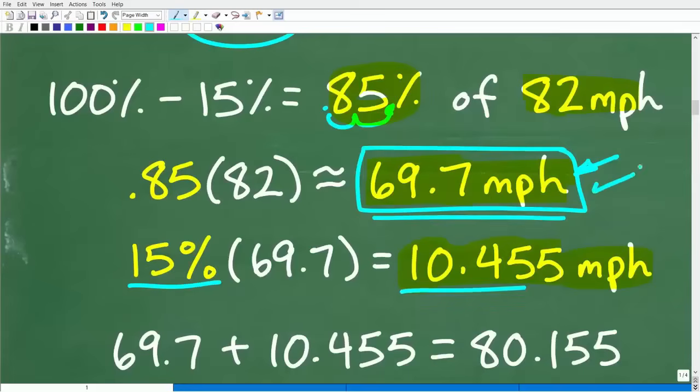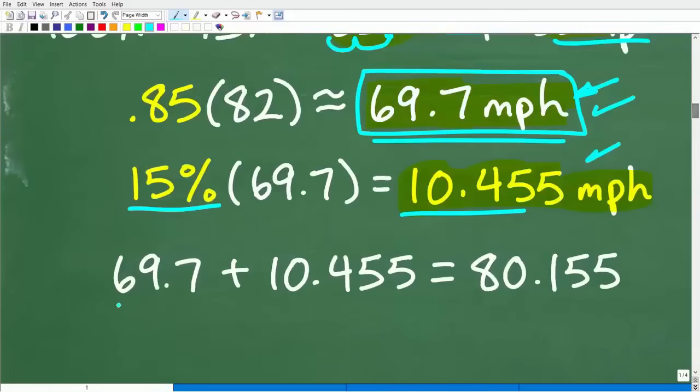So when we add these two, we should get back to 82 miles per hour. But look what happens here. What happens is we get 69.7 plus the 10.455, which is 15% of the 69.7. We only get back to 80.15.